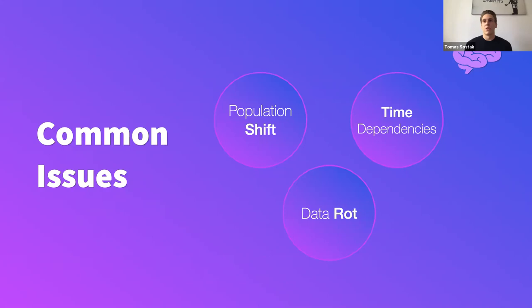You're probably familiar with these common data issues: population shift, data rot, and time dependencies. Population shift is what we're discussing here. Data rot refers to data that is too old and no longer relevant to include in your dataset. Time dependency is where you're training on data but not accounting for seasonalities or trends — distributions going up or down over time. You'd want to take this into account when building your model.